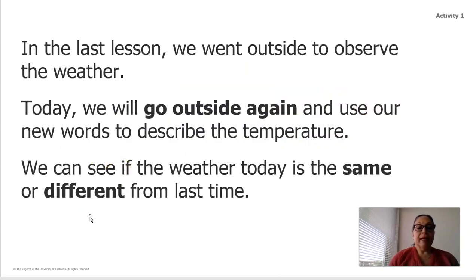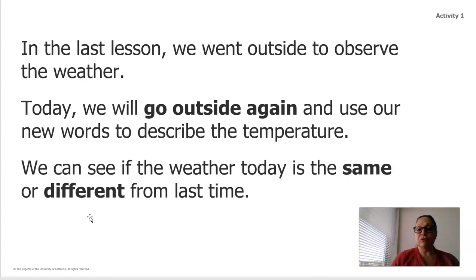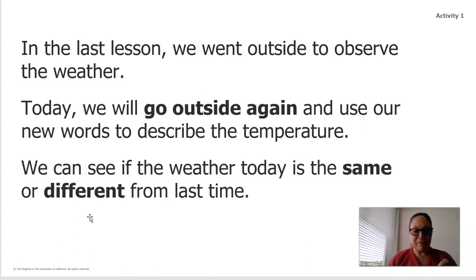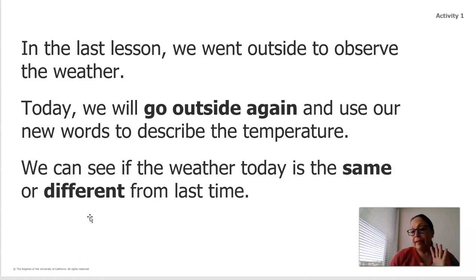So now, in the last lesson you went outside to observe the weather. Today we will go outside again and use our new words to describe the temperature. We can see if the weather today is the same or different from last time. When I say last time, I want you to think about when Scientist Kate and you had the lesson, and you went outside. What was it like that time? And how is it different? It could be the same, or it could be different — what makes it different from last time? Just think about that for a minute.